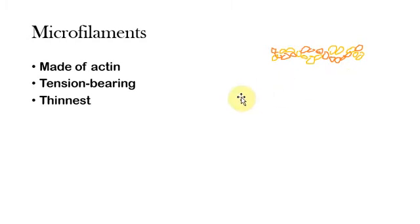Between the working of microfilaments and microtubules, one preventing the cell from being pulled outward and one preventing the cell from being pushed inward, that's what enables the cell to keep its shape for the most part. Microfilaments are also the thinnest of the three types of proteins.